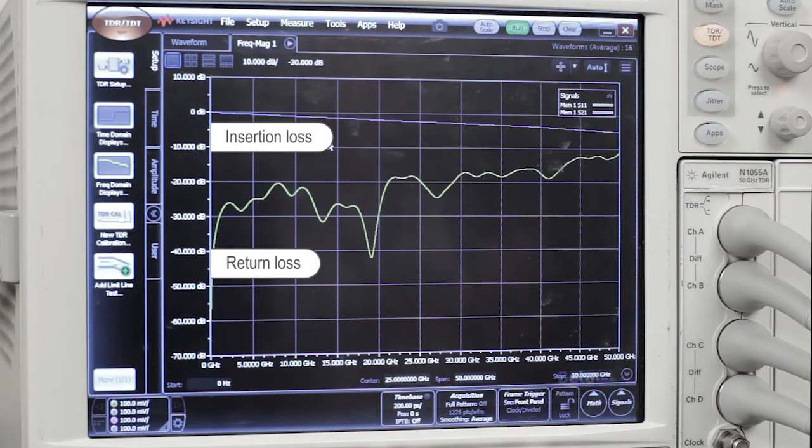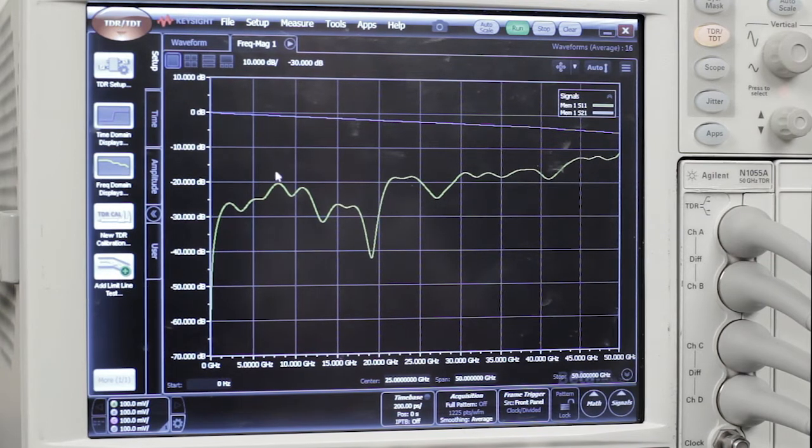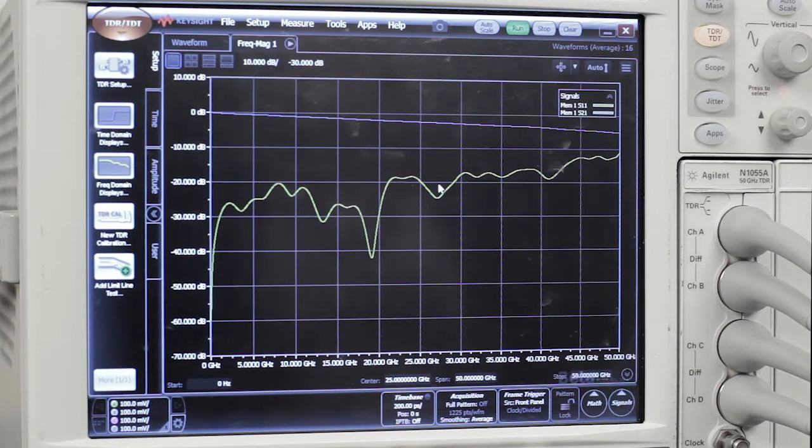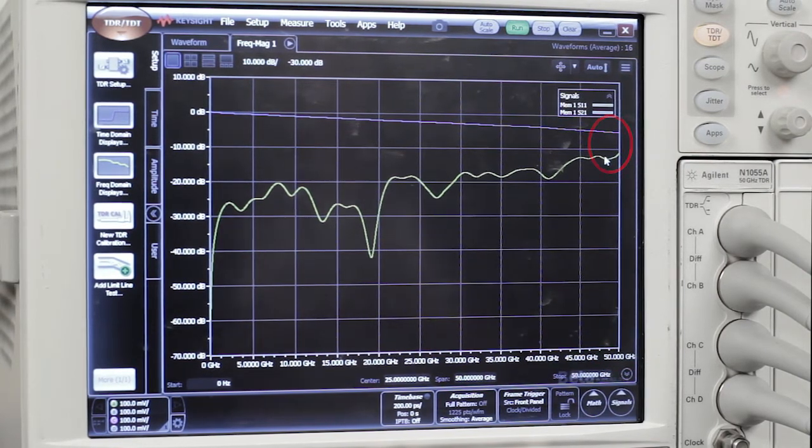I've just put the insertion loss and return loss of the fixture on the screen, and the thing to look for is the frequency where the return loss and insertion loss are the same, because the AFR model does not work well beyond any frequency where insertion loss and return loss are the same. All the way up to 50 GHz, the insertion loss and return loss don't ever touch each other. So this extraction worked well to beyond 50 GHz.